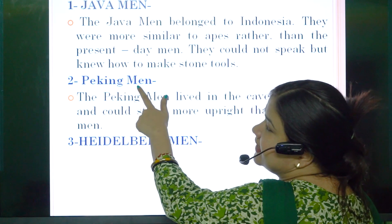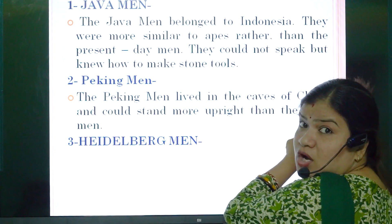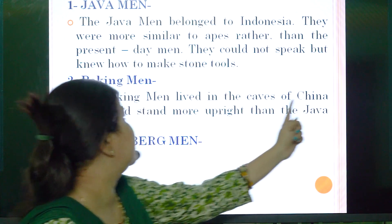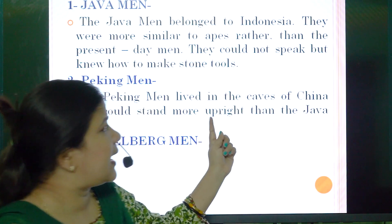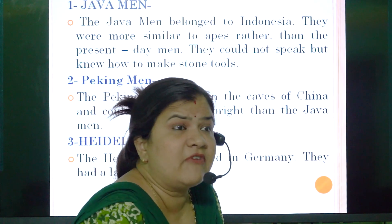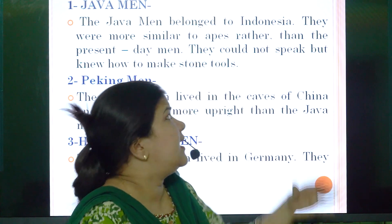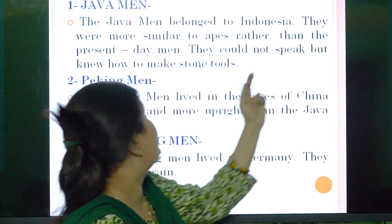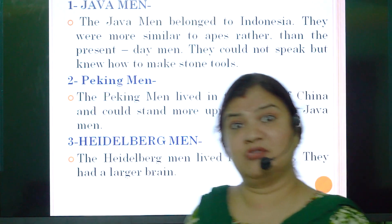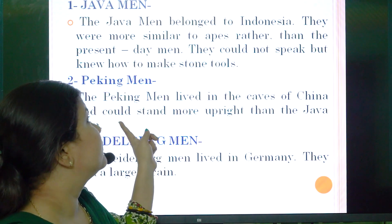Moving on to the Peking men: the Peking men lived in the caves of China. Please underline this. They could stand more upright than the Java men. So while Java men belonged to Indonesia, the Peking men belonged to China and lived in caves, but could stand straighter than the Java men.